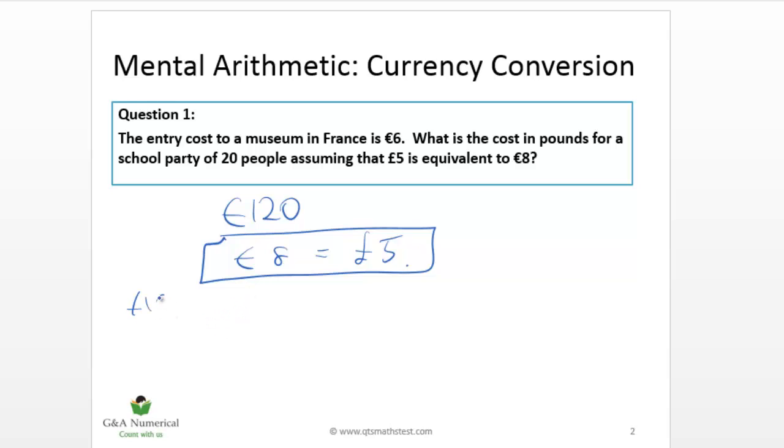So let's times by 10 first, so 8 times 10 is 80. We match it on the other side, so 5 times 10 is 50. So now we've learnt that 80 euros is the same as 50 pounds, but we haven't quite reached our target yet. But we're almost there.